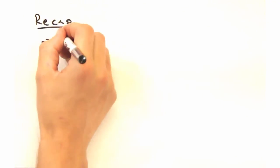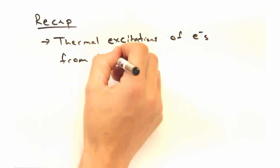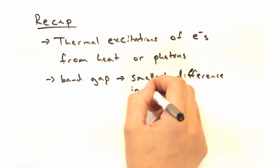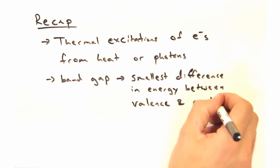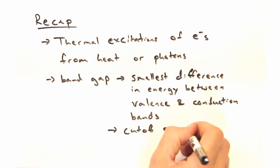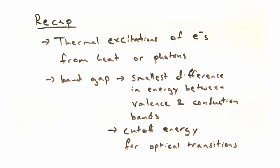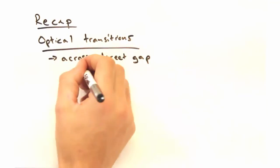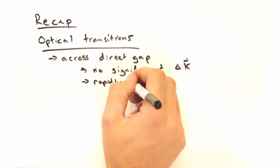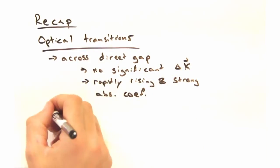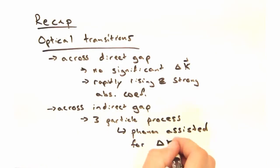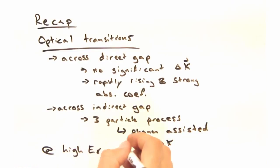So it looks like it's a good time for a recap. Today we looked at how electrons can be thermally excited into the conduction band through either heat or exposure to photons with a specific energy. We also defined the band gap as the smallest difference in energy between the conduction band edge and the valence band edge. This gap defines the cutoff energy for optically induced transitions. We discussed why optical transitions across a direct band gap exhibit virtually no change in the electron's momentum, and we get a rapidly rising absorption coefficient. And the indirect band gap transition involves a three particle process between a photon, electron, and phonon that leads to a small rising absorption coefficient. However, the absorption coefficient rises rapidly for optical transitions that are direct in nature.